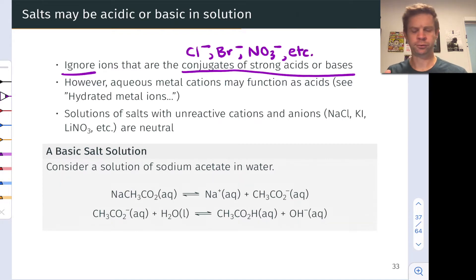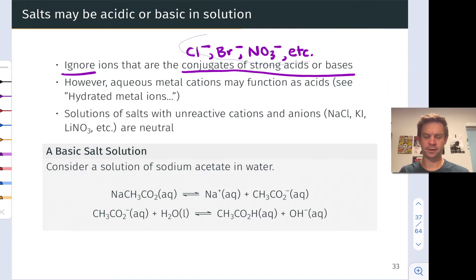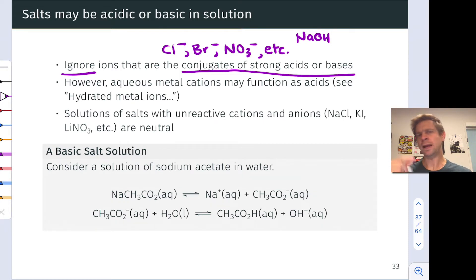What about the conjugates of strong bases? This is a bit more of a thinker. What's the conjugate acid of a base like NaOH? We know that's a strong base. Its conjugate acid would involve adding a proton to NaOH. That proton would become attached to the oxygen atom, and in adding a proton we would end up with H2O or HOH and the sodium cation. We can think of the sodium cation, the hydrated sodium cation surrounded by water molecules in solution, as the conjugate acid of NaOH.